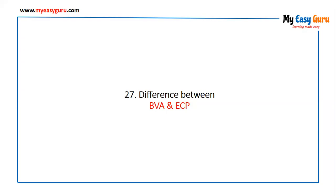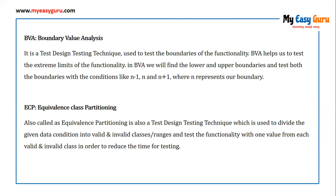What is the difference between BVA and ECP? BVA stands for Boundary Value Analysis. It is a test design technique used to test the boundaries of functionality and helps test the extreme limits. In BVA, we find the lower and upper boundaries and test both with conditions like N-1, N, and N+1, where N represents the boundary.